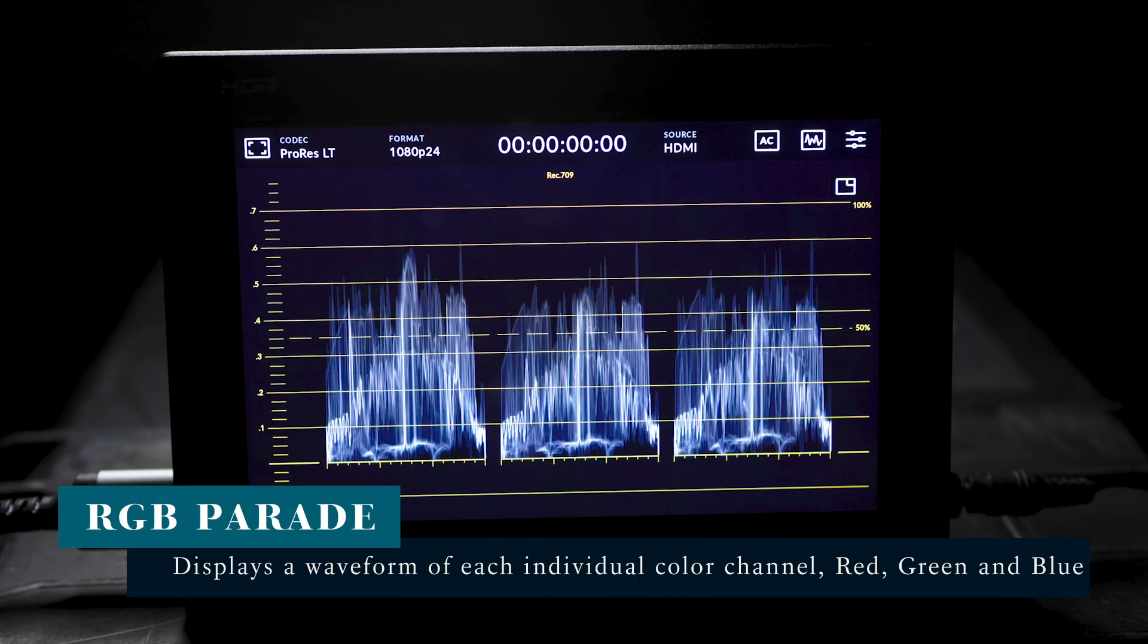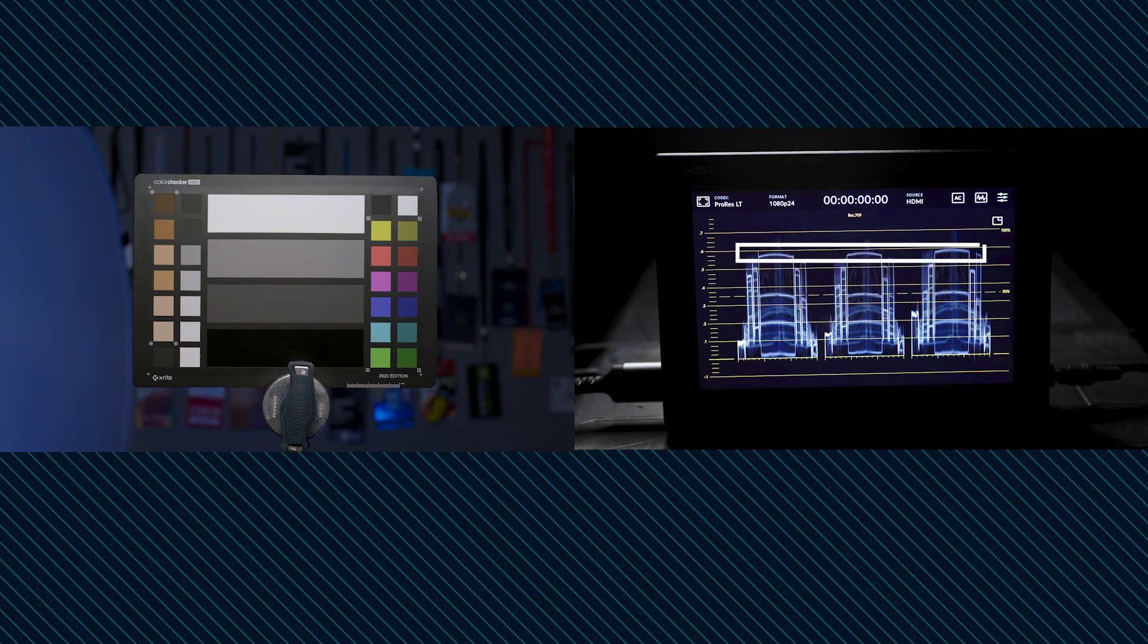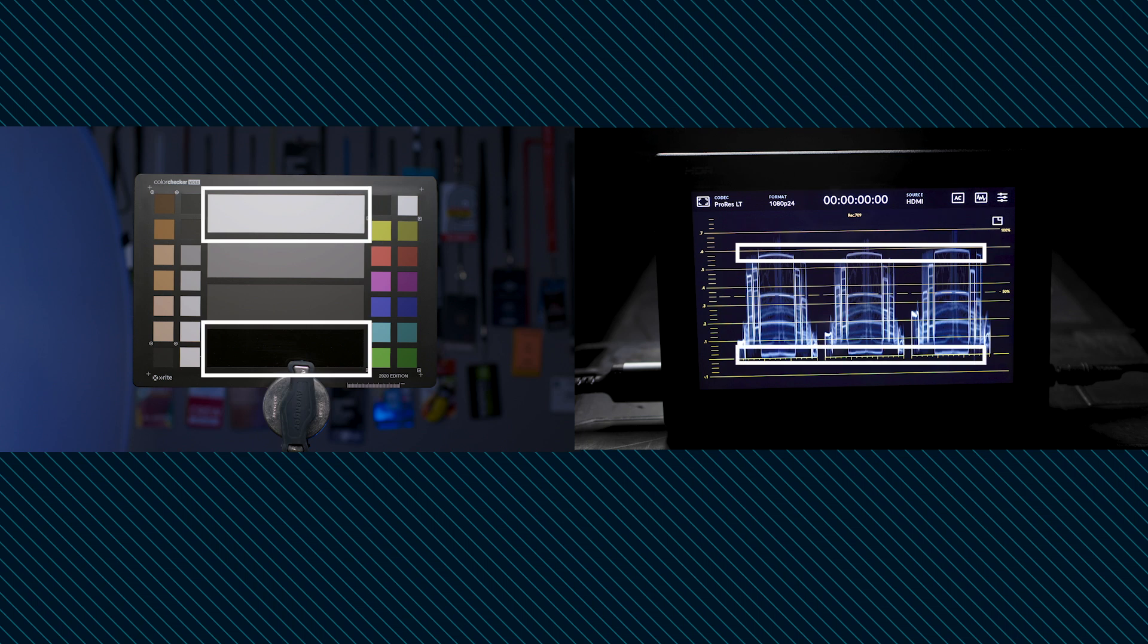An RGB parade is just like a waveform, except it displays brightness information for each individual color channel instead of the overall image. Its use is based on the idea that equal parts of red, green, and blue create neutral colors. 100% RGB equals white, and 0% RGB is black. 50% is gray.